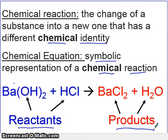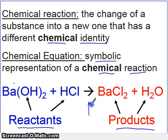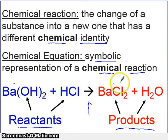There could be more than one reactant, there could be more than one product, or there can only be one reactant and only one product. The arrow in the middle is what separates the two — it will be the separation between the reactants and the products. The reactants are always on the left side, and the products are always on the right side.